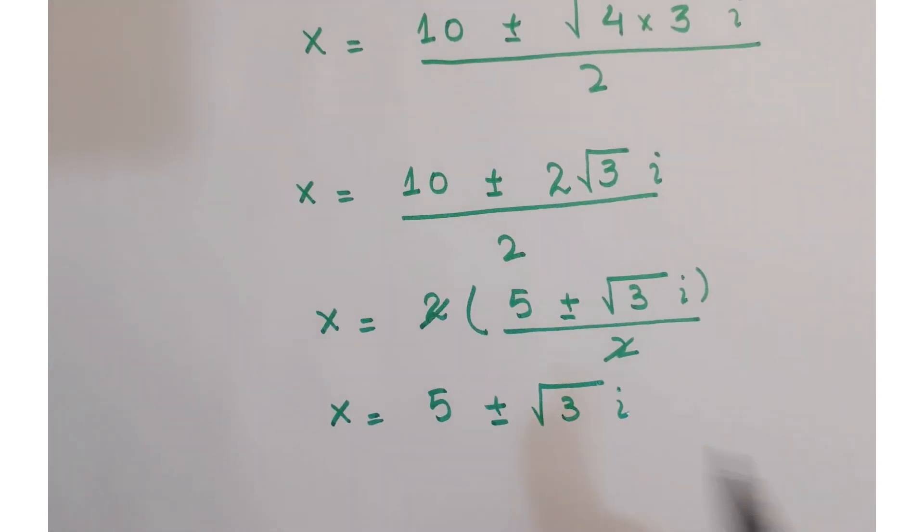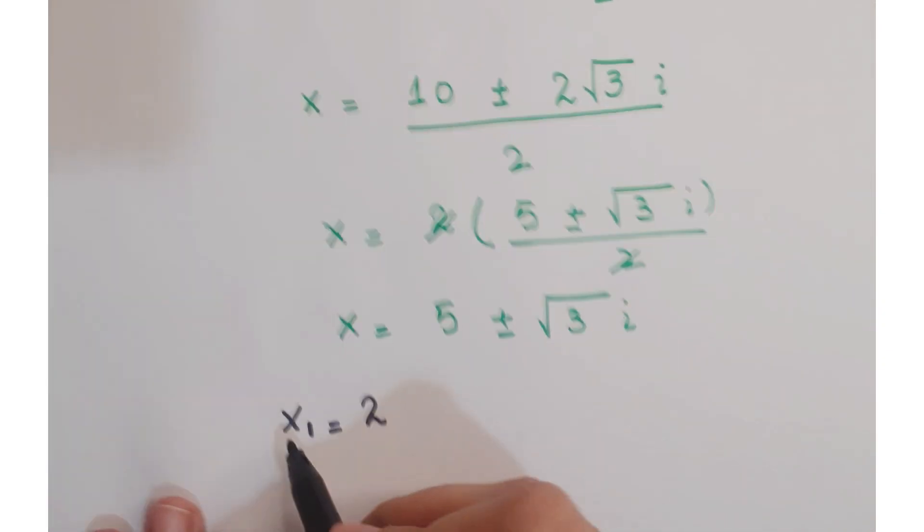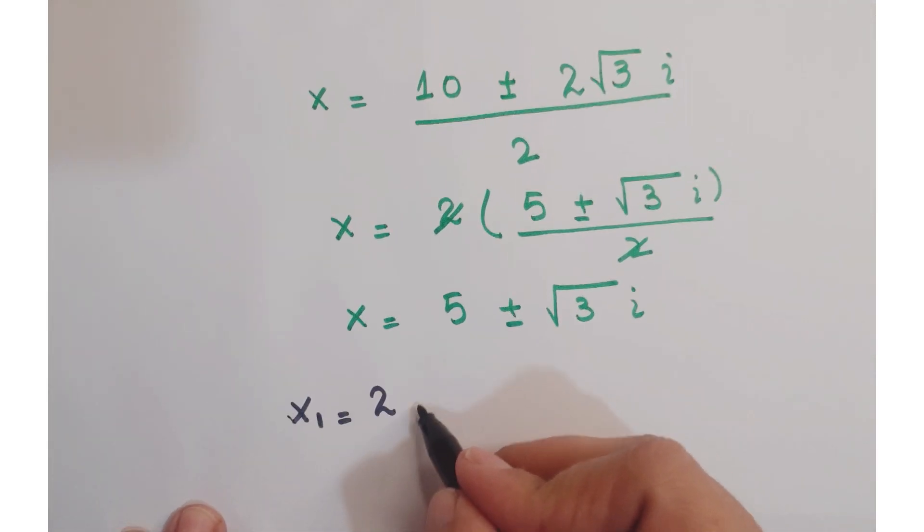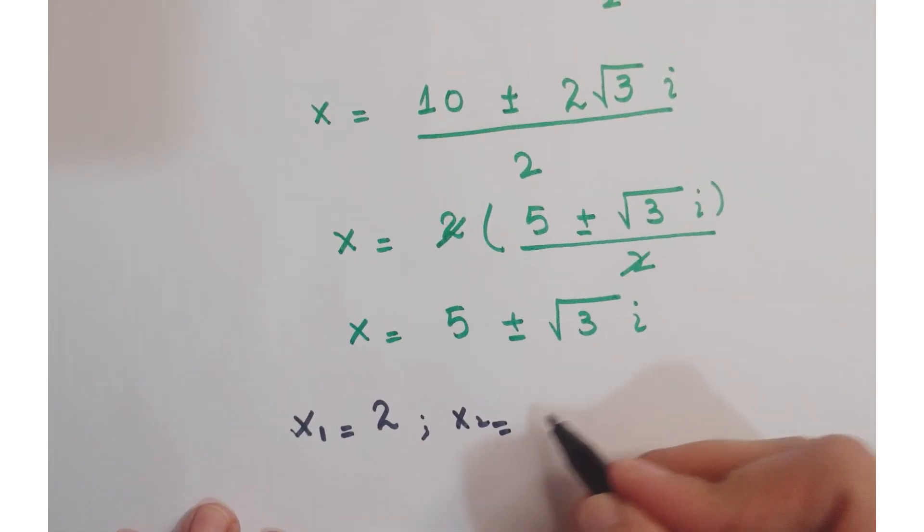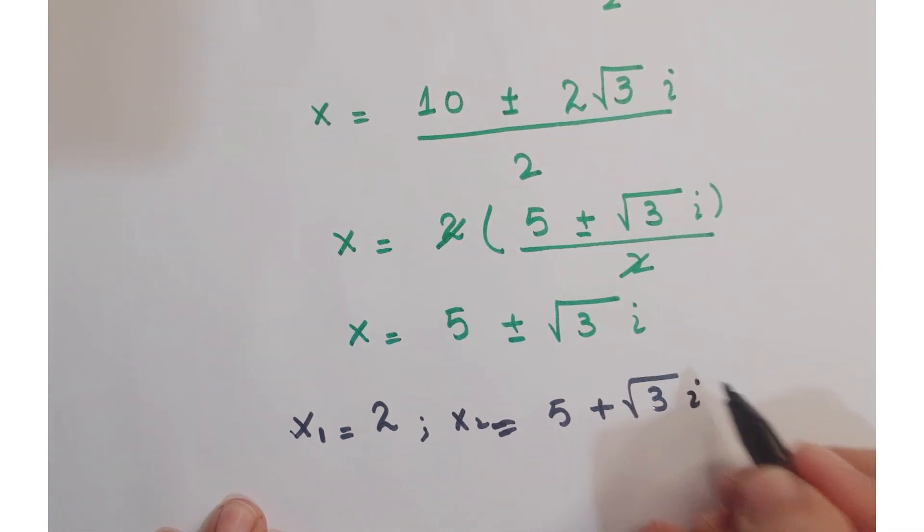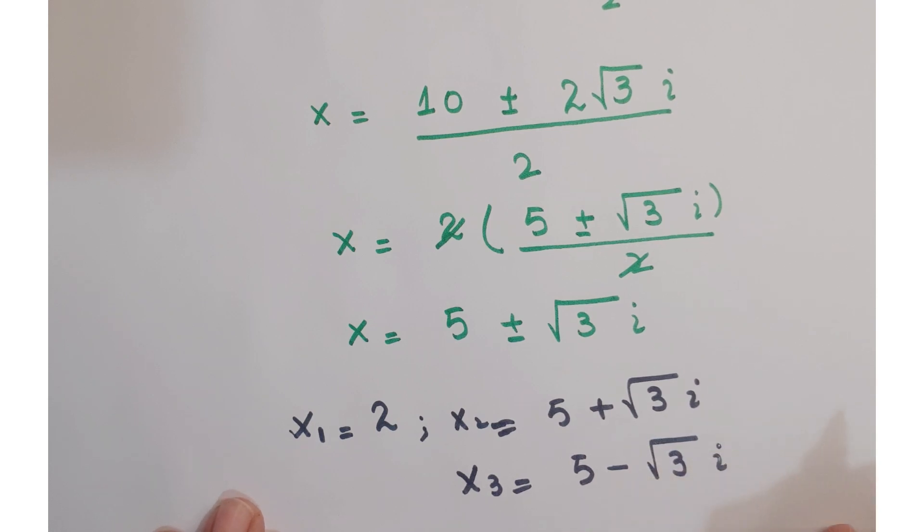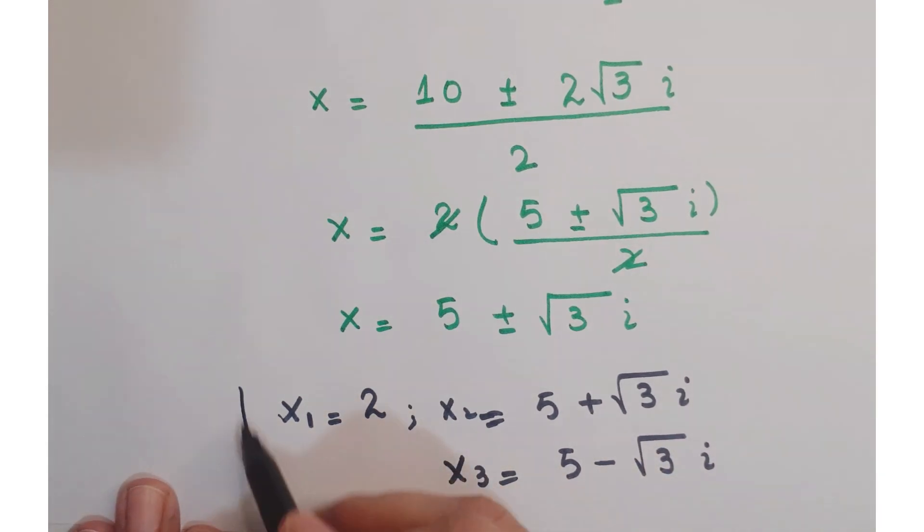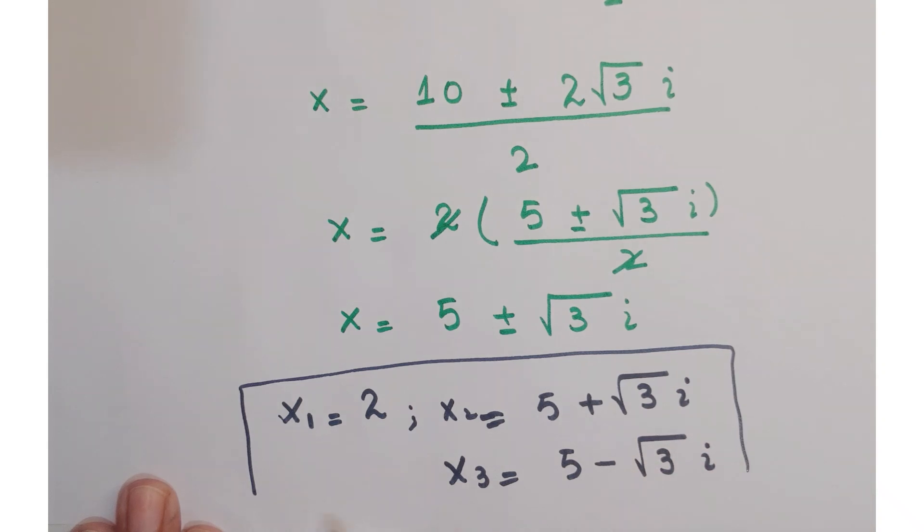So there are 3 solutions of x. First of all, x equals 2, and we have second solution of x is 5 plus under root 3i, and the third solution is 5 minus under root 3i. I hope you understand it and if you like it kindly subscribe my channel. Thanks for watching.